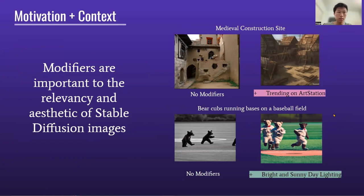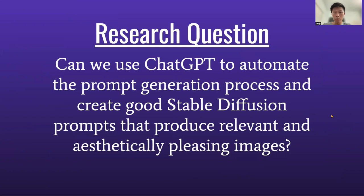So our research question is: can we use ChatGPT to automate the prompt generation process and create good Stable Diffusion prompts that produce relevant and aesthetically pleasing images?